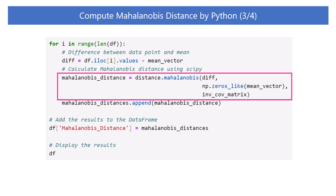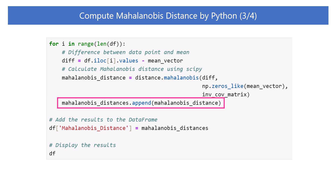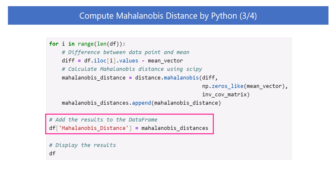Compute the Mahalanobis distance using the Mahalanobis function in the SciPy spatial distance module. diff is the vector of deviations between the data points and the mean. np.zeros_like(mean_vector) is the zero vector of the mean vector's shape. The function uses these vectors and matrices as arguments to compute the Mahalanobis distance. Append the calculated Mahalanobis distances to the list, then add them to dataframe DF as a new column called Mahalanobis distance. Then, display the dataframe.